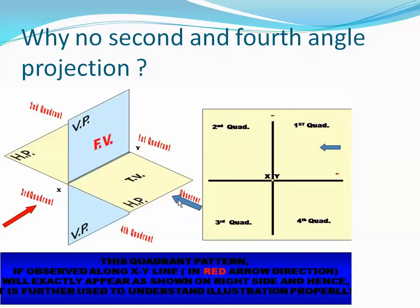The object is placed so that the front view will be on the vertical plane and the top view on the horizontal plane. When this plane is tilted in the clockwise direction by 45 degrees, the vertical plane ends up at the top and the horizontal plane at the bottom. So the front view is at the top and the top view is at the bottom.